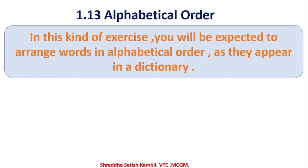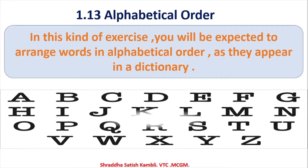In this kind of exercise, you will be expected to arrange words in alphabetical order as they appear in a dictionary. We all know that in a dictionary, certain words come before certain other words. For example, EAT will come first and another word like ELEPHANT will come later. Because they appear according to the letters in the word. Let me show you a chart where we have all the letters of the alphabet. A comes before B, C comes after B, and so on and so forth.